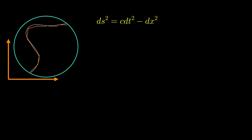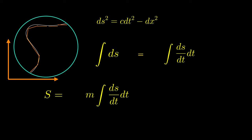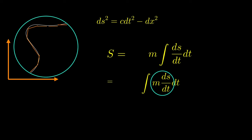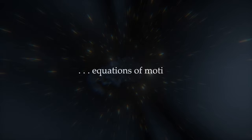How is this related to getting the Lagrangian? We introduce a time dependence so that ds becomes (ds/dt) times dt. Then we multiply by the mass m and bring it inside the integral. This is called the Lagrangian of the particle, and the integral S is called the action. The principle of least action — probably the most important fundamental principle in all of physics — states that a particle always travels through spacetime such that the action is minimal, giving us the equations of motion.